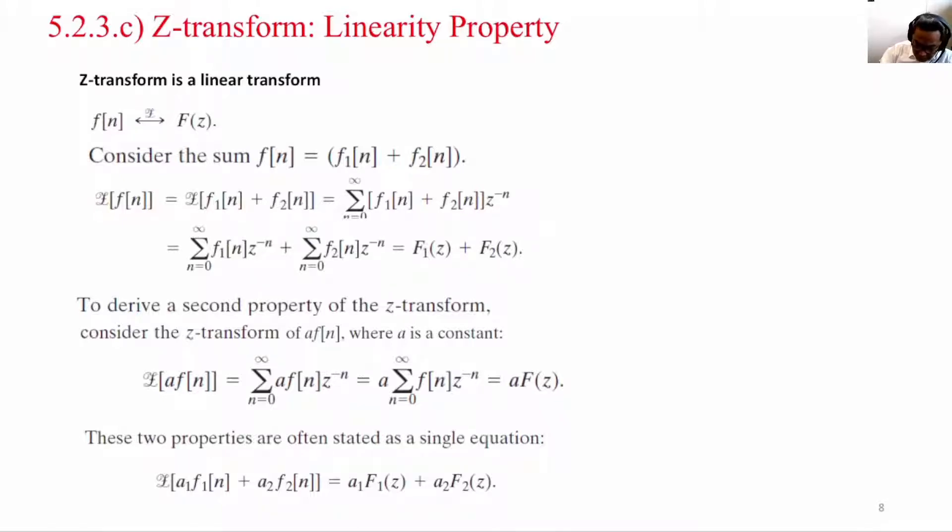When linearity property, what we mean is that when we have the Z-transform of Fn to F of Z, when Fn is sum of F1n plus F2n, we can actually take F1n, perform Z-transform on it, F2n, perform Z-transform on it, and add them up. This is equivalent to the Z-transform of Fn.